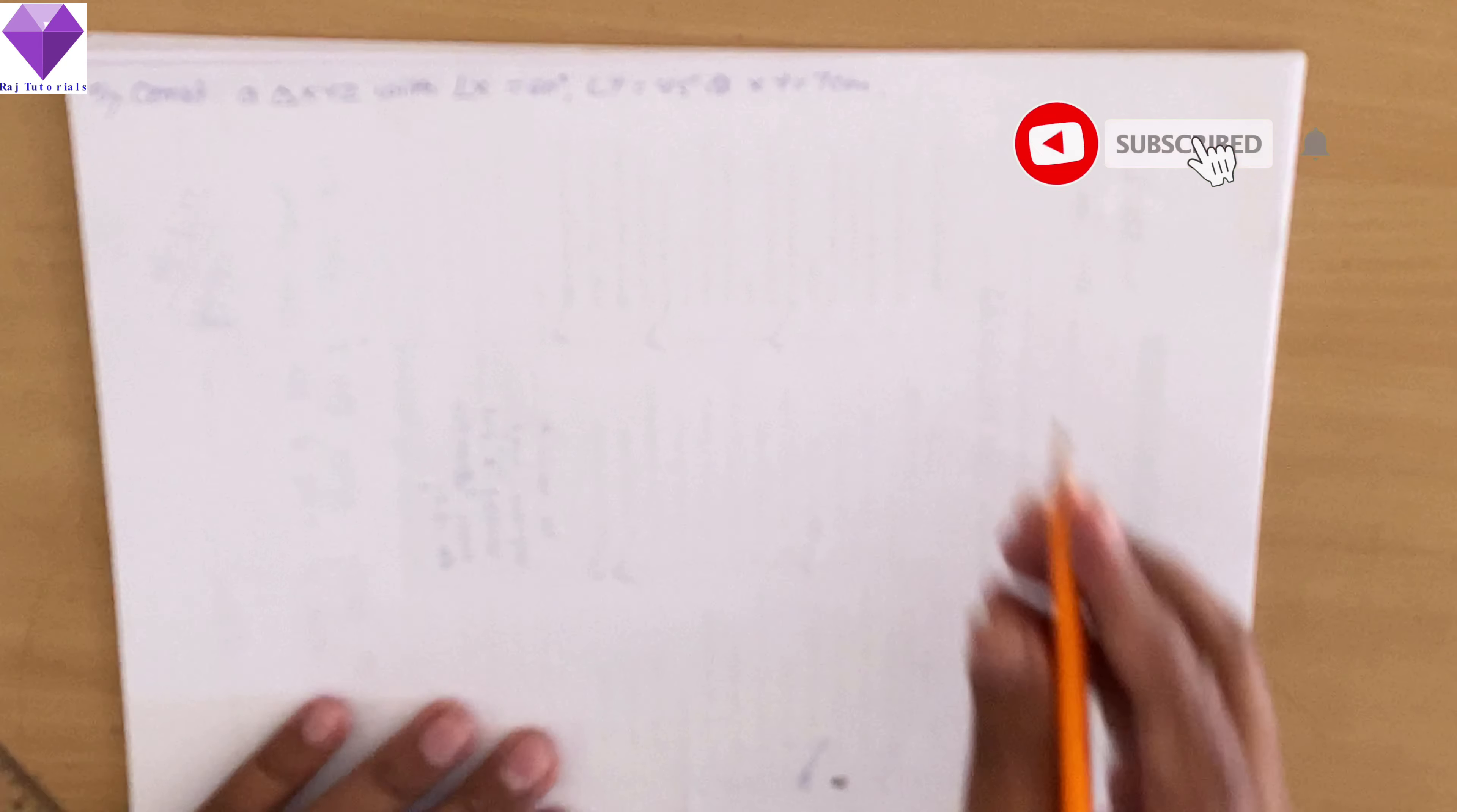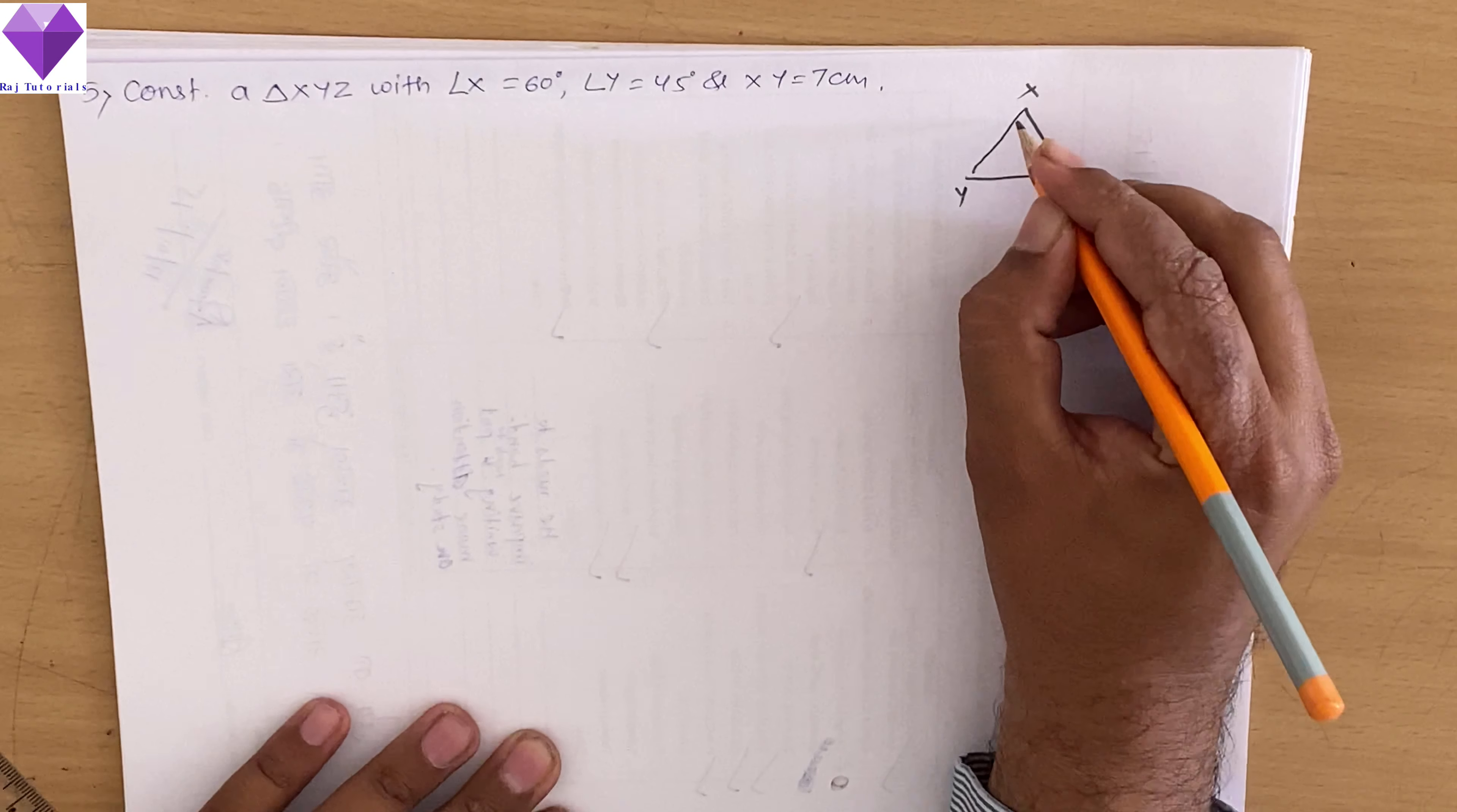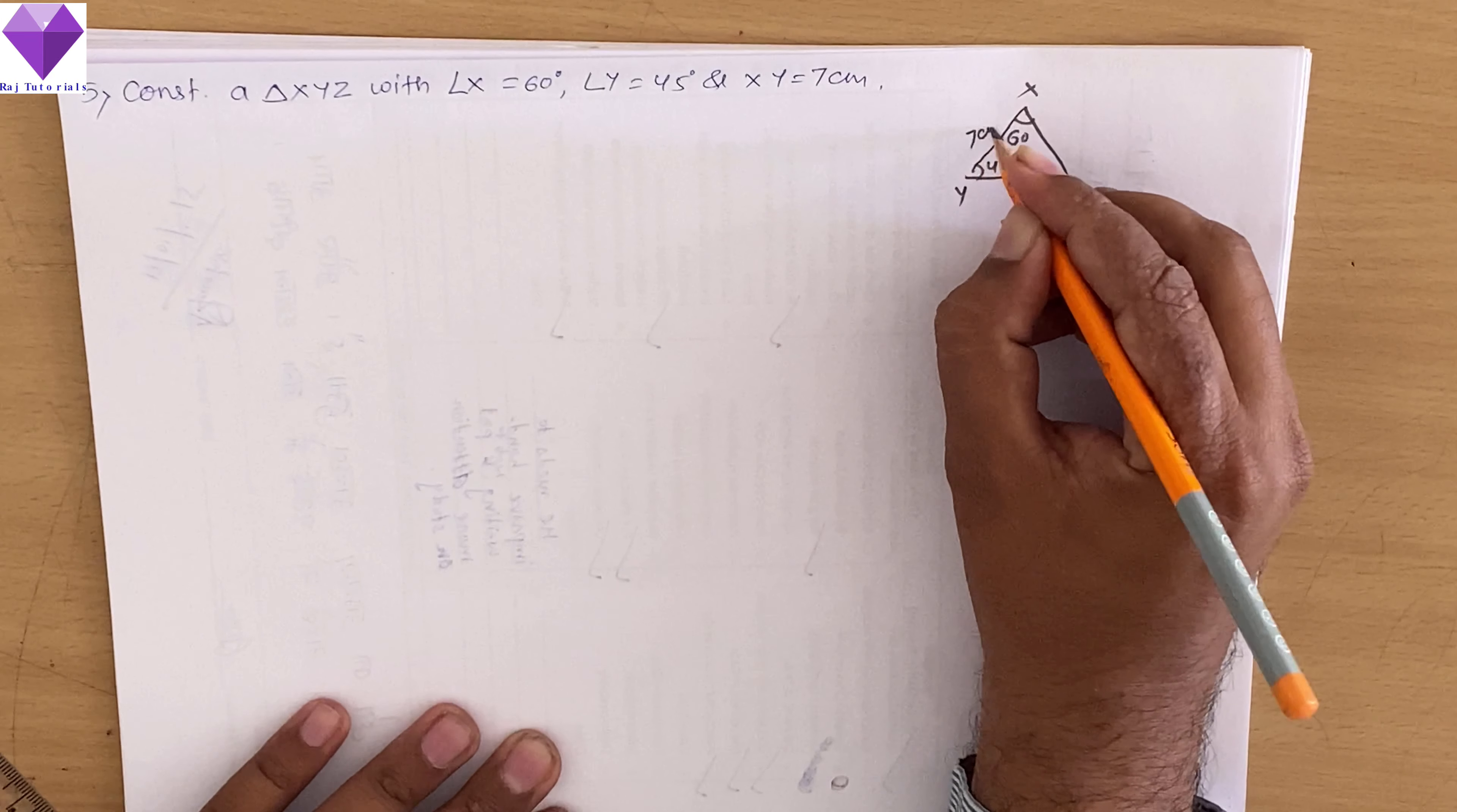Hello students, today we are going to construct triangle XYZ. Now angle X is 60 degrees given to me, this is 45 and XY is 7 cm.